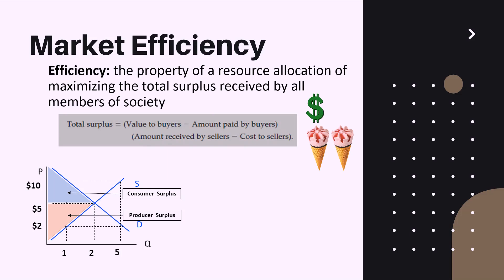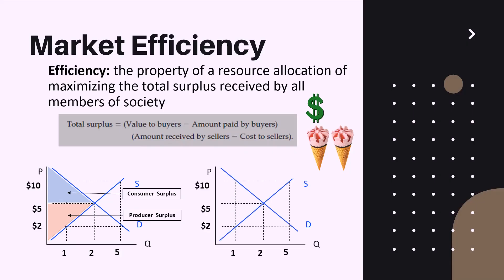Finally, let us think about how elasticity affects total surplus. Looking at a separate graph of supply and demand, if we rotate our curves to get more inelastic demand and supply curves, the area under the curves increases, thus increasing the surpluses. The conclusion is that the more inelastic the supply and demand curves are, the higher the surplus.